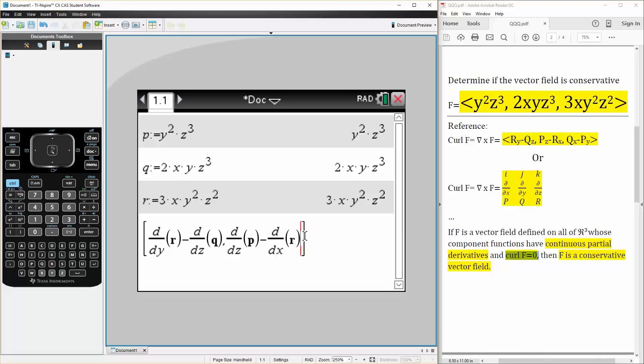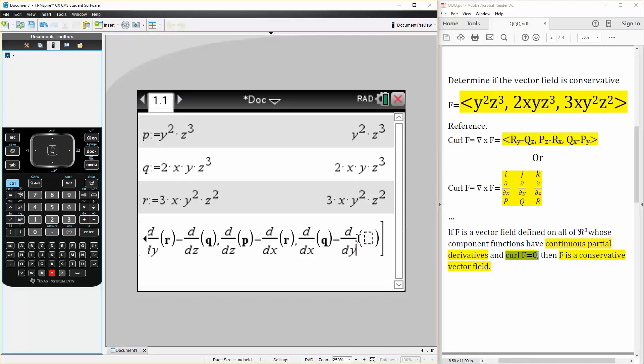Comma shift minus, we have dx for q, minus shift minus dy for p.